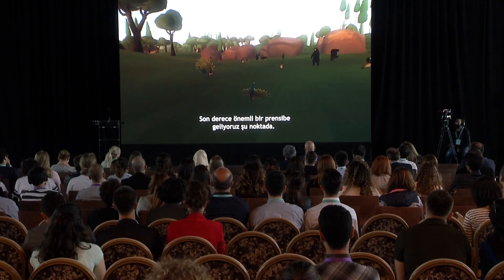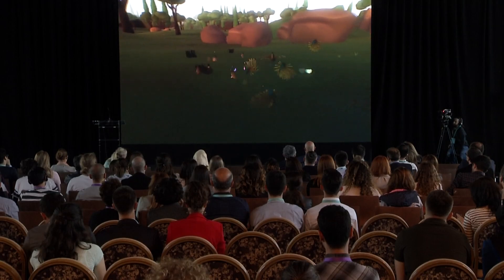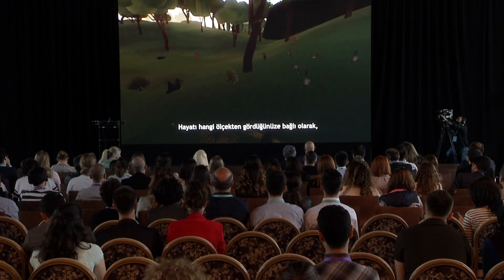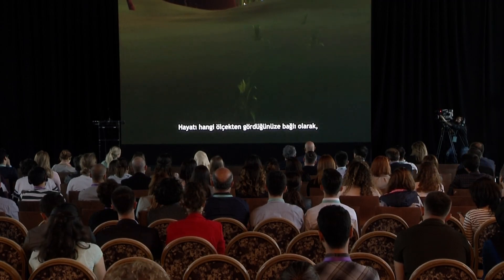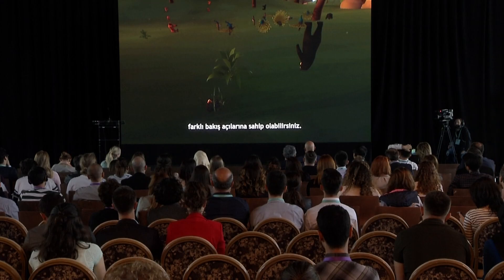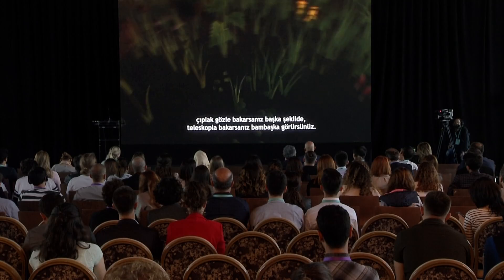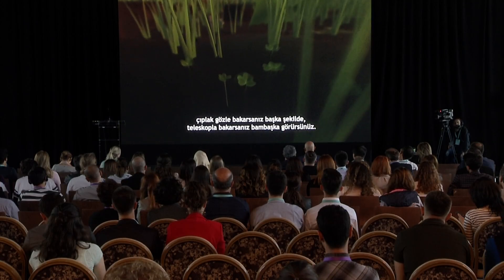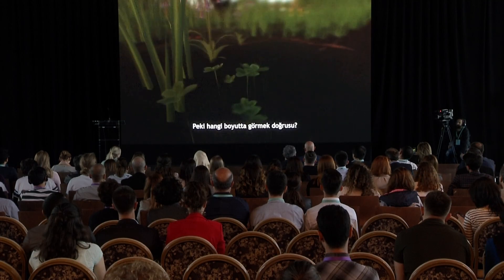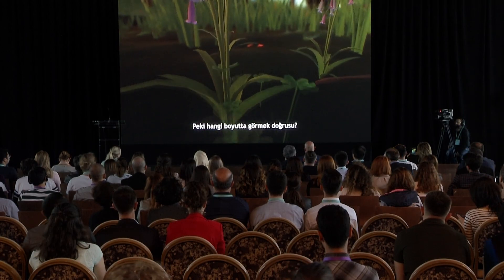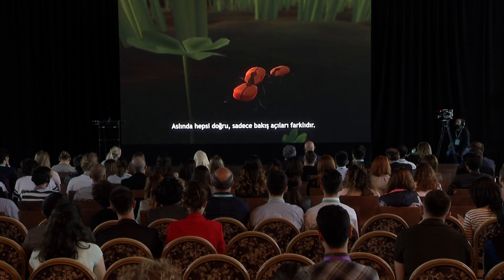We come here, right at the start, to an extremely important principle: the different points of view you get when you change your level of magnification. You can look at something with a microscope and see it a certain way, with the naked eye and see it another way, or with a telescope and see it yet another way. Now which level of magnification is the correct one? Well obviously, they're all correct — they're just different points of view.